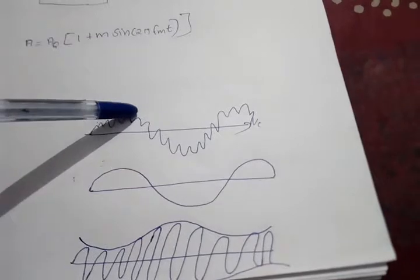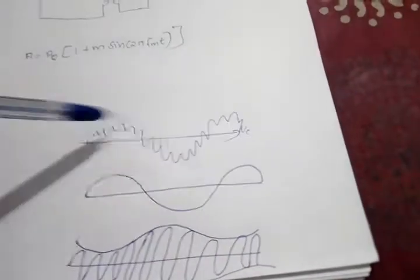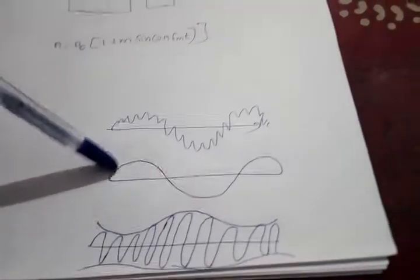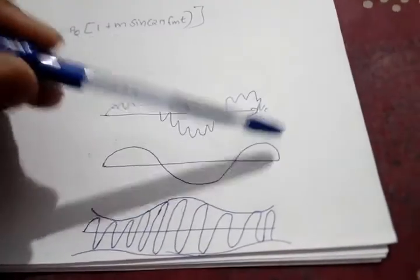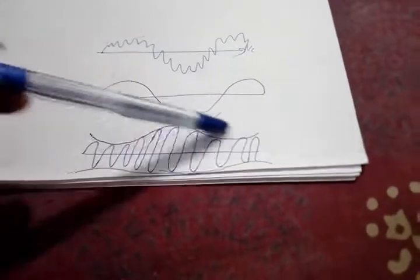This is the waveform of carrier signal. This is the waveform of message signal. And this is the AM modulated signal.